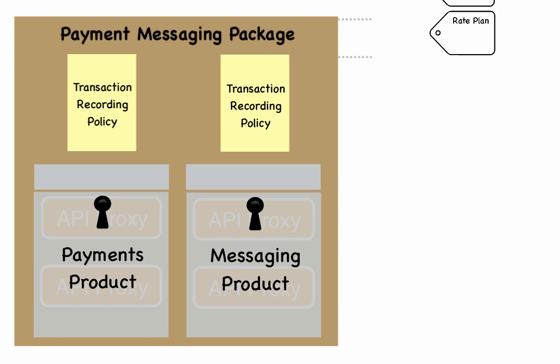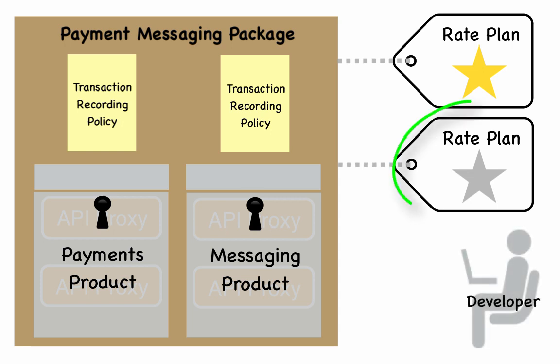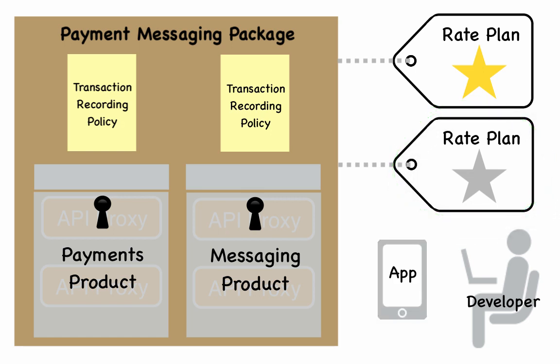Once you've created a package, you can create one or more rate plans which define the business model for your API package. A rate plan defines how and how much you will charge for using your API. It also defines whether you will include a premium period, setup fees, and revenue sharing, amongst other options. Developers can now sign up for the rate plans that give their apps the right amount of access to the products they need.